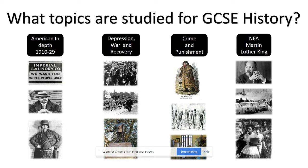In Year 10, students study America in depth. This course covers America from 1910 to 1929. We study events from the open door policy which welcomed immigrants into America, to why this policy was changed when the government passed laws to stop certain groups from coming into the country. We look at the treatment of black Americans, including how they were segregated as well as how they were treated under the KKK.